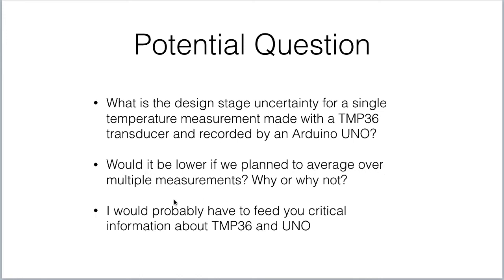Would uncertainty be lower if we average over multiple measurements? If we average over more measurements, the variation in the mean goes down as the square root of the number of measurements — but that's only for random errors. If we had a particular TMP36, its manufactured characteristics wouldn't change if we measured with it over and over. We'd only get lower uncertainty if we used multiple different TMP36s with different manufacturing error biases to measure the same system.